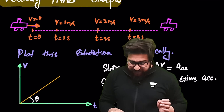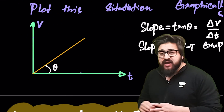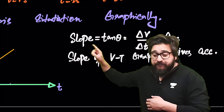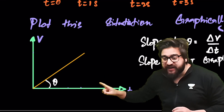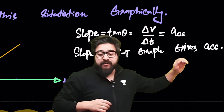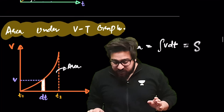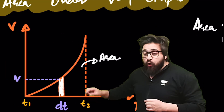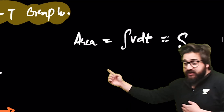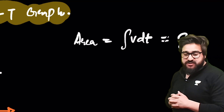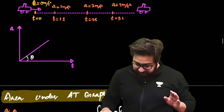The velocity-time graph: the slope of the v-t graph is tan θ = Δv/Δt, which equals acceleration. So the slope of the velocity-time graph gives acceleration. The area under the velocity-time graph gives displacement, since ∫v dt = s.